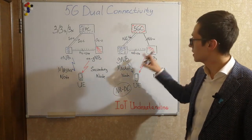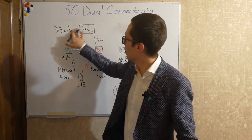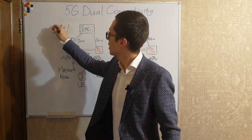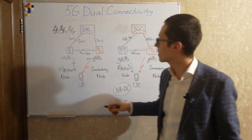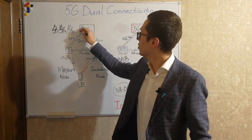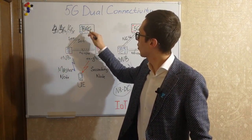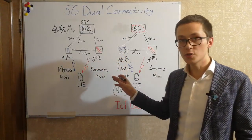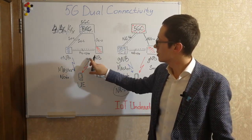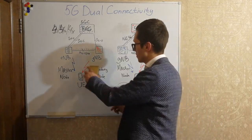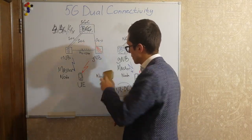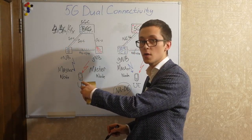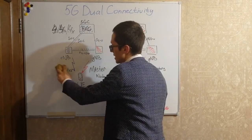There is another option called option 4, 4a, or 4x. In this case, we've already deployed our 5G core network, and we want the 5G gNB to be the master node, while using our LTE resources only as additional resources — as a secondary node.